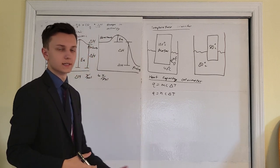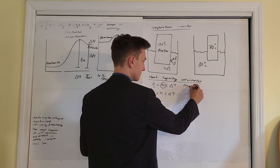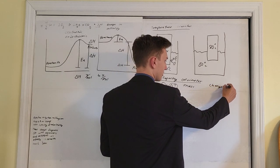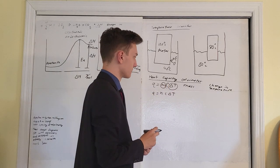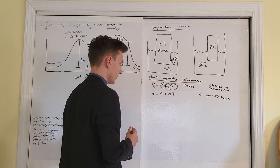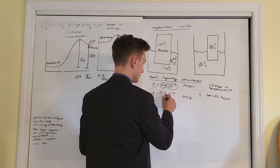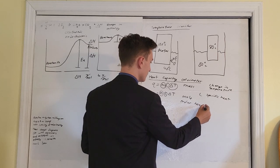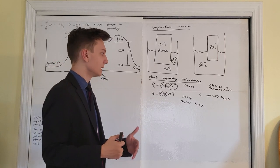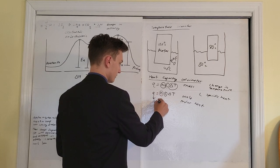In Q = mcΔT: M represents mass, ΔT represents the change in temperature, and C represents the specific heat. The equation Q = ncΔT is the same but takes N as moles and C as the molar heat. One uses mass as input, the other uses moles. Q, your energy, will be in units of kilojoules. Mass is in grams, C is in joules or kilojoules per gram·°C, and delta T is in degrees Celsius — grams and degrees C cancel, leaving kilojoules.